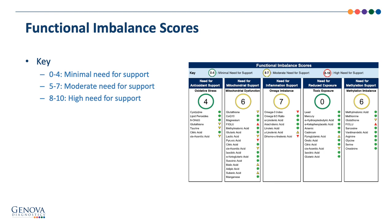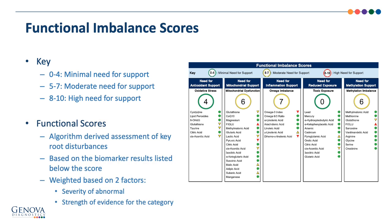Above each functional imbalance pillar is a key for the score and its corresponding color. A green score of 0 to 4 indicates minimal need for support. A yellow score of 5 to 7 indicates moderate support needed. A score of 8 to 10 indicates high need for support, shown in red. The scores are derived from an algorithm that takes into account biomarker severity and the strength of evidence — the more peer-reviewed literature supporting an association, the more weight it is given in the algorithm.